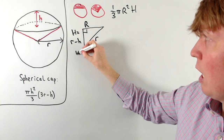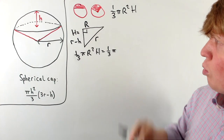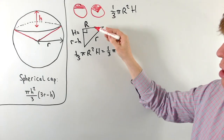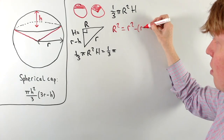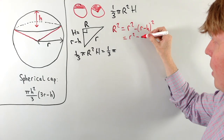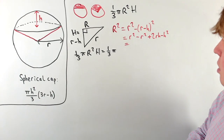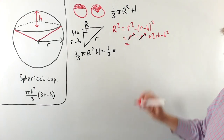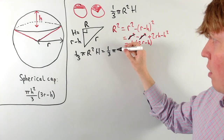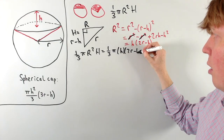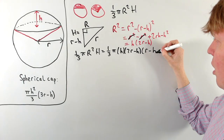Plugging into the cone formula gives (1/3)π R² × (r − h). Using Pythagoras: R² + (r − h)² = r², so R² = r² − (r − h)² = r² − r² + 2rh − h² = h(2r − h). Substituting this in, the cone volume is (1/3)π × h(2r − h) × (r − h). Expanding, this gives (1/3)π h times (2r² − 3rh + h²).